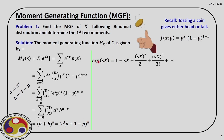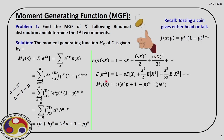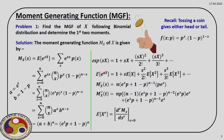Recall that e^(sx) is an infinite series. To find the moments, we differentiate the moment generating function. Differentiating once and putting s equal to 0 gives the first moment. We can also find the second moment by differentiating twice and putting s equal to 0. For the first moment we get np, which is the mean. For the second moment we get np(np + q). These are the first two moments, already known to us, and we obtain the same result from the moment generating function.